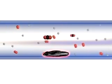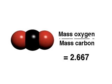Analysis of carbon dioxide shows that the mass ratio of oxygen to carbon is 2.667.